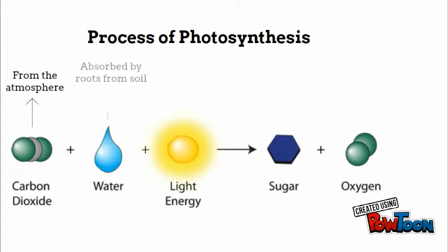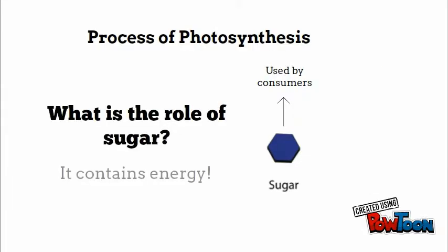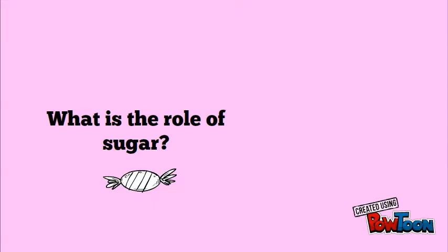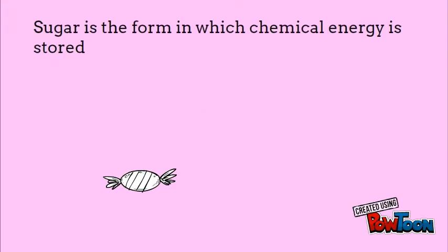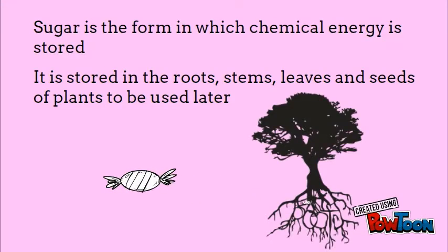In photosynthesis, producers take carbon dioxide, water, and light energy from the atmosphere to produce sugar and oxygen. The sugar produced in this process contains stored chemical energy — it is the form in which chemical energy is stored. This energy can be converted into starch and stored in the roots, stems, leaves, and seeds of plants to be used later, or converted into other energy molecules.